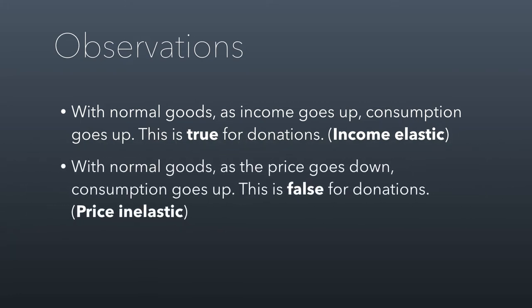But another thing about normal goods is you buy more of them as the price goes down. If a really fancy car costs half as much, you'd have a lot more people buying it. These are normal goods because price going down is like your income going up for that thing. But that's not true for donations — this is the weird part. The price of donations going down or up doesn't change the behavior. That means demand for donations is price inelastic, meaning demand for donations doesn't respond to changes in price. And you're not going to find any other good like this — I challenge my students every year to find a good where you buy more of it as your income goes up, but you don't buy more of it as the price goes down. That's what's true for donations.